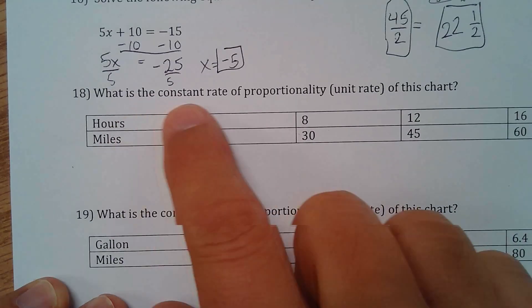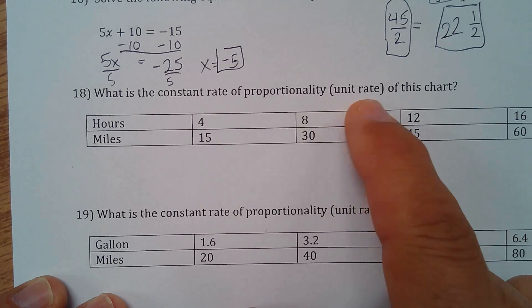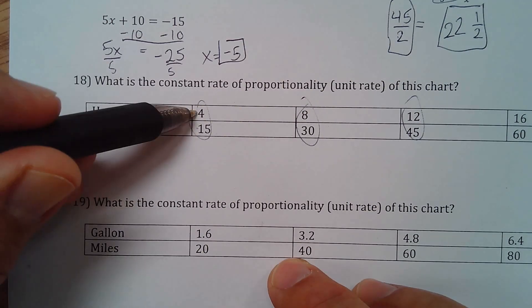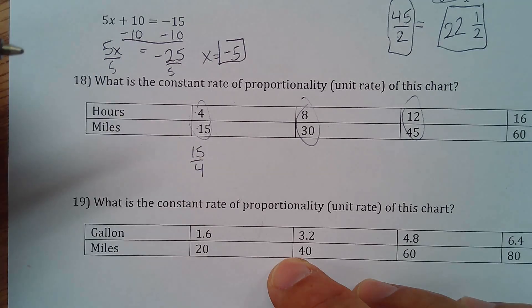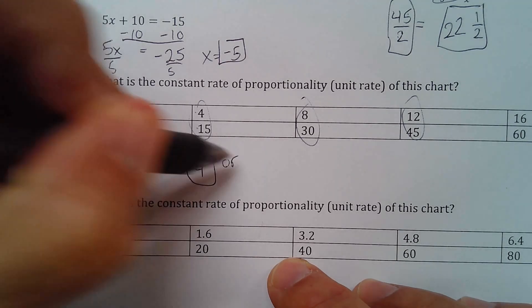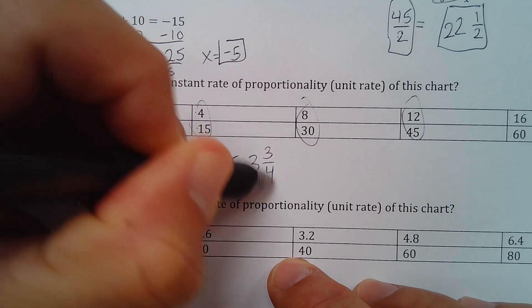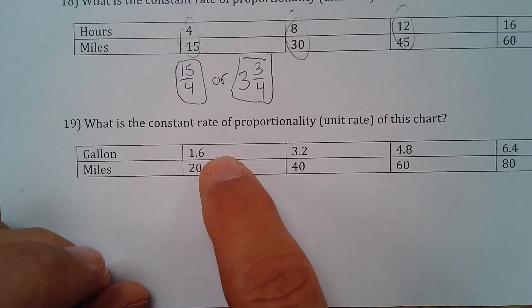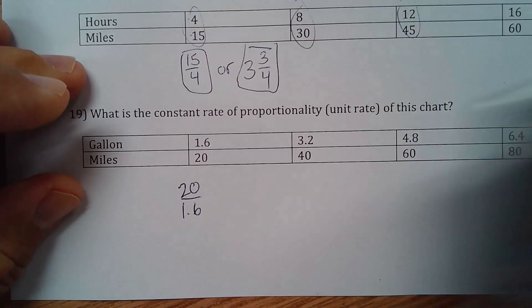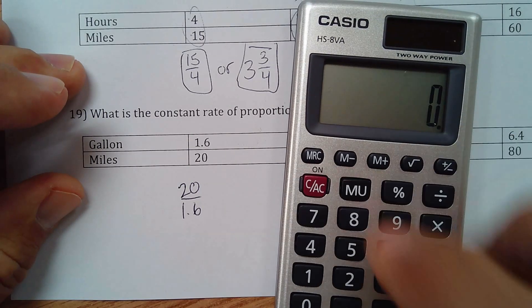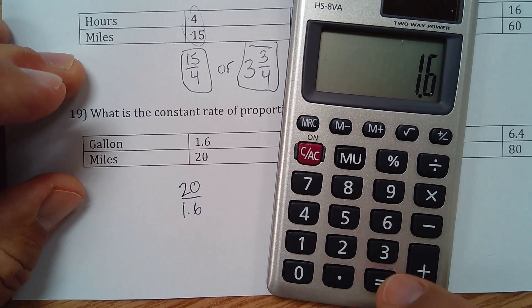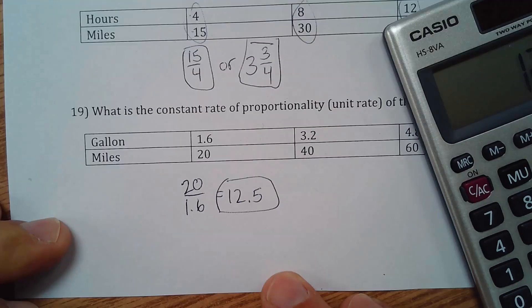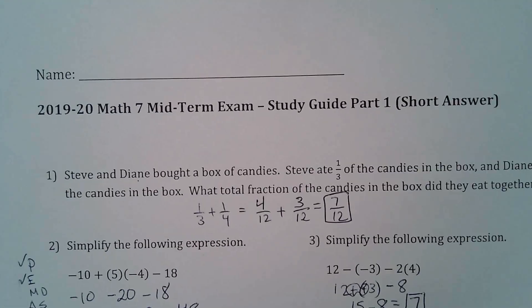Okay. The unit rate. All you got to do for this. So, what is the constant rate of proportionality? Which is also known as the unit rate for this chart. All you got to do is, you can just take any of these here and divide them. But you have to do the miles divided by the hours. So, you have 15 divided by 4. I guess that would be it. Or, 4 goes into 15 three times with 3 left over. You could write it like this. And the same thing with this. Let's see. I guess I would just do 20 divided by 1.6. 20 divided by 1.6. Let's throw out the calculator here. See what that says. 20 divided by 1.6 is 12.5. And that is the unit rate.